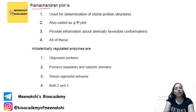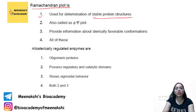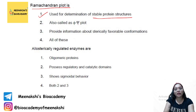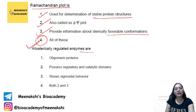The Ramachandran plot uses dihedral angles (phi and psi) and is used for the determination of stable protein structures and favorable conformations such as alpha helix, beta sheet (antiparallel and parallel). It is also called the phi-psi plot and provides information about sterically favorable conformations. So the answer is all of the above.